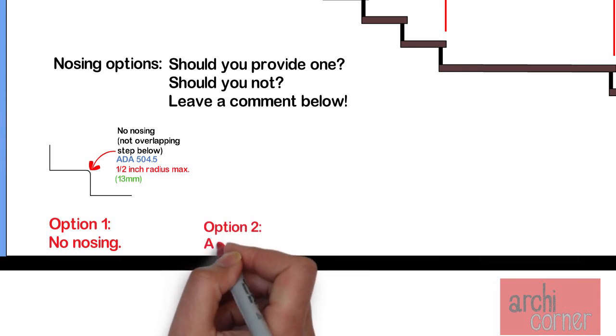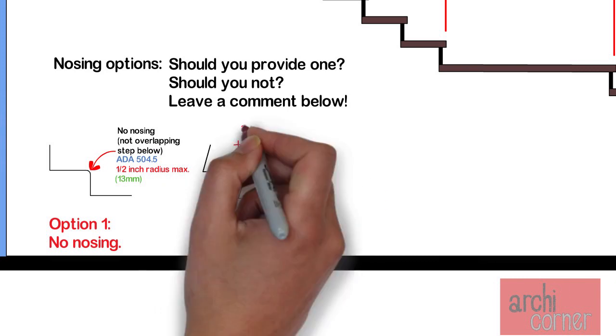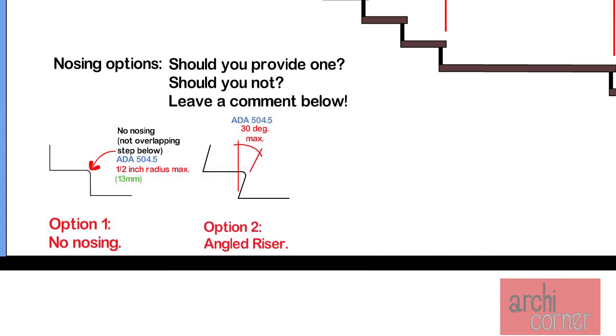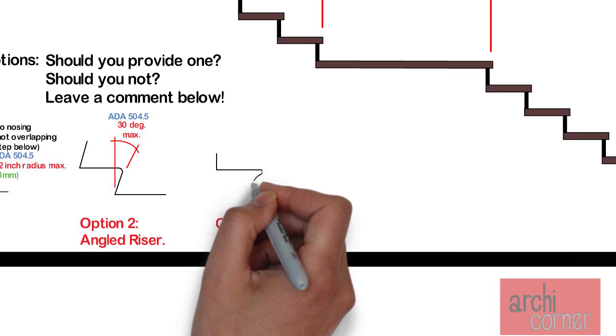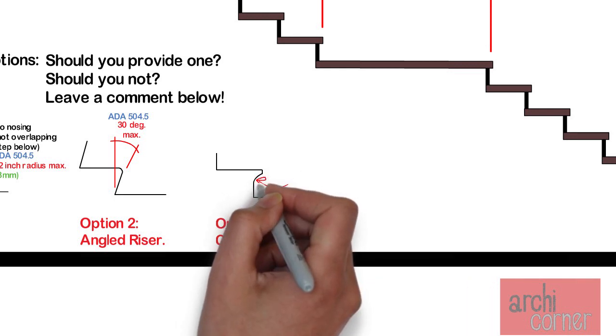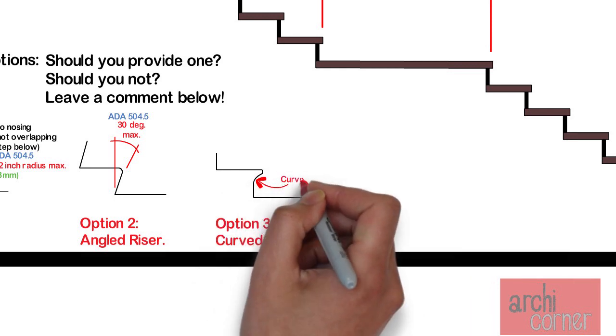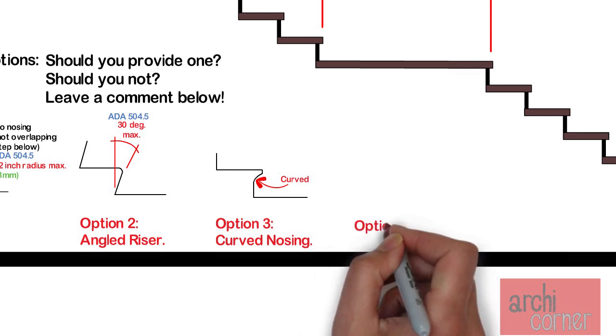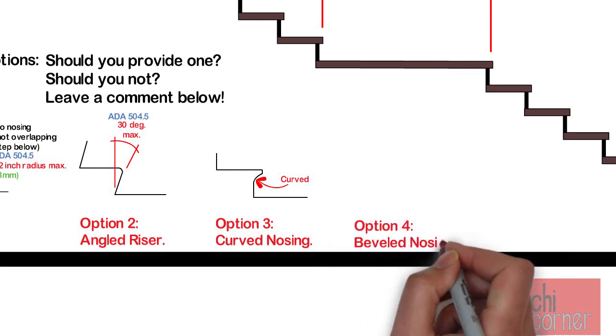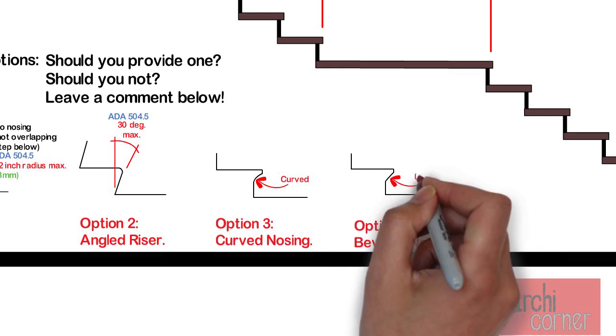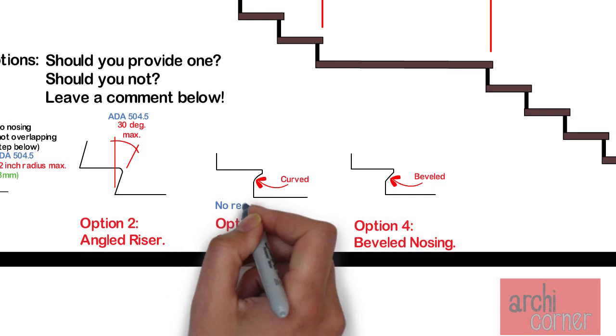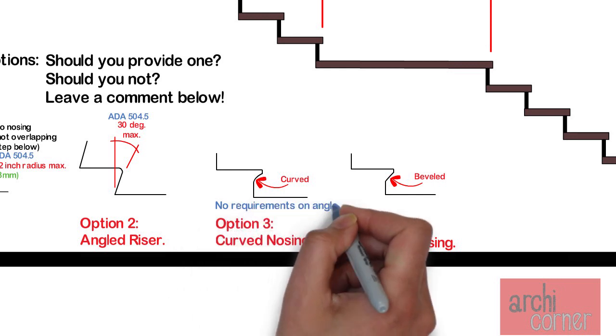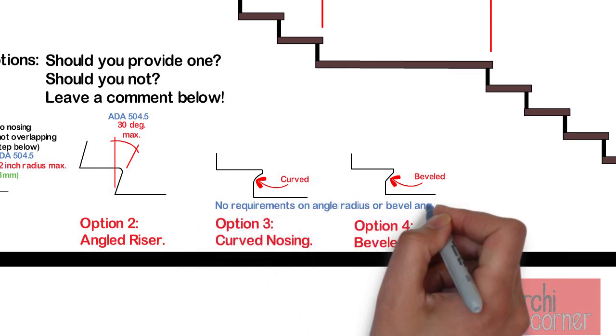Option 1: No nosing. Most people don't even know that you are not required to have a nosing. But you are allowed to just not have a nosing. That means that your upper tread's leading edge does not overlap the lower tread. In this instance you only have to provide a radius that is half inch max at the leading edge. Option 2: You create an angled riser with a 30 degree angle as shown. Option 3: The riser is mostly vertical but the upper tread is curved underneath just as shown here. Last but not least, option 4: The riser is mostly vertical but it's beveled underneath as shown here. Interestingly there are no requirements on the angle or chamfer size to be used in option 3 and 4.